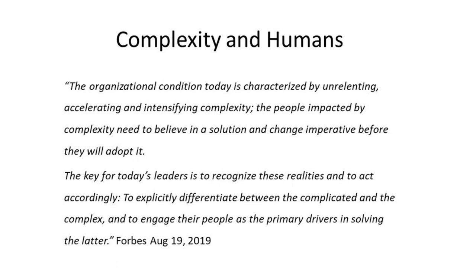Complexity is a state of having many parts and being difficult to understand or find an answer to. Systems are made of components, connections, and modulators — constraints such as safety rules being a form of modulator. A complex adaptive system is one in which perfect understanding of the individual parts does not automatically convey a perfect understanding of the whole system's behaviour. They are complex because the behaviour of the ensemble is not predicted by the behaviour of the components — the sum is not the whole of the parts. They're adaptive in that individual and collective behaviour mutates and self-organises corresponding to change-initiating events. Small things can make a really big difference.